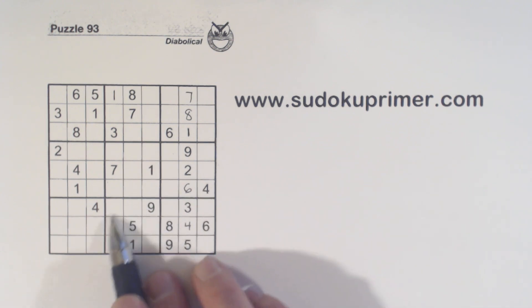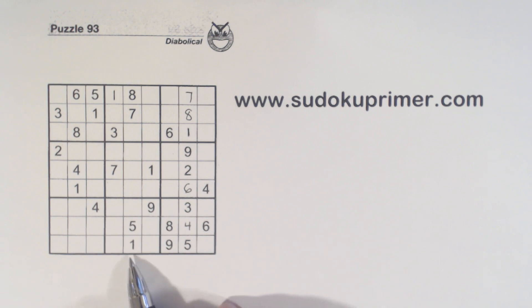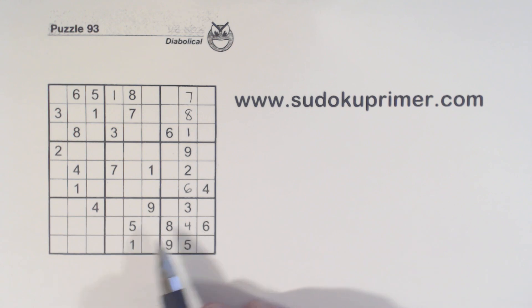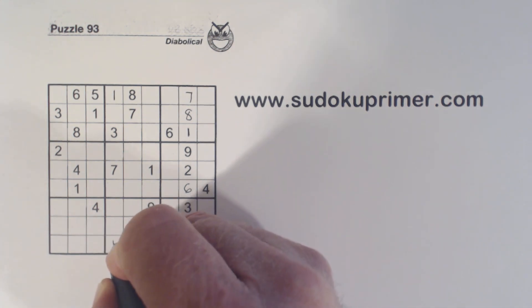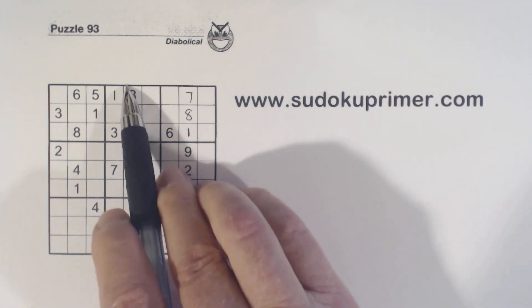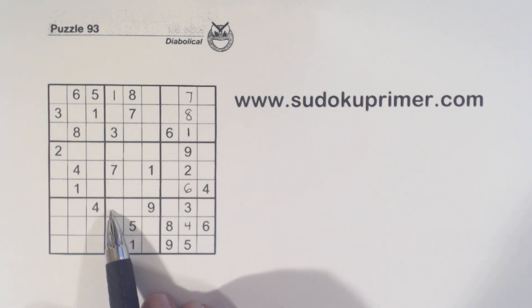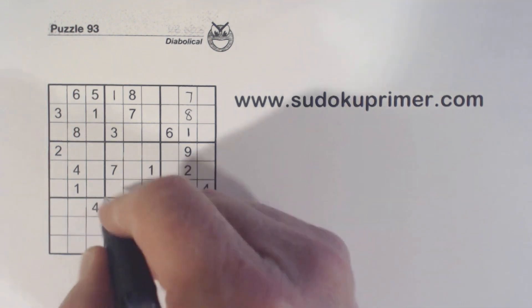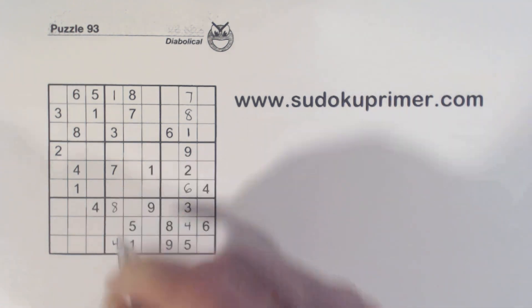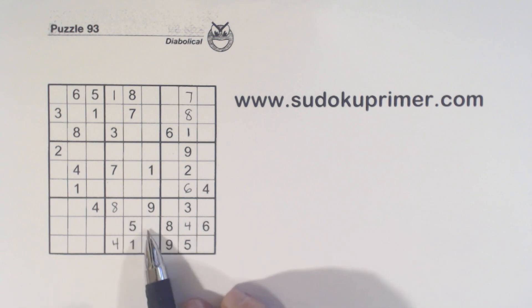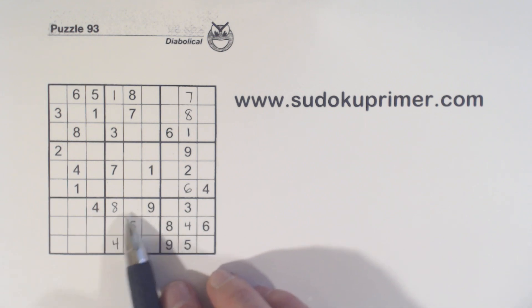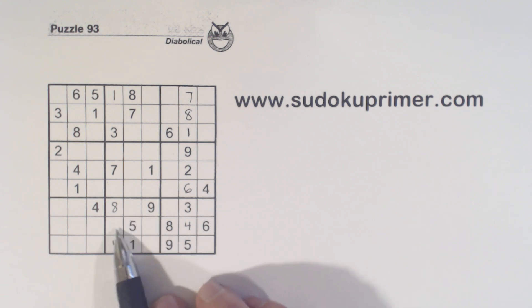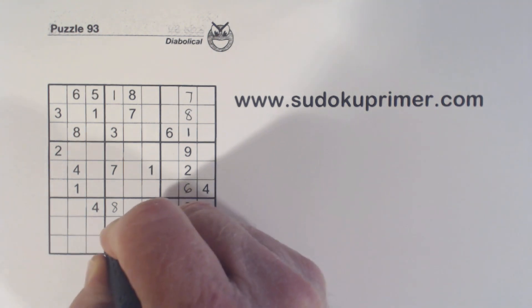Now let's look at this box right here and see what we can fill in knowing these are three-seven twins. We've got a four here and a four here, so we know that's a four. We've got an eight here and an eight here, so we know that's an eight — that can't be an eight right there, so that's an eight. Now we only have two numbers left: these three-sevens we found, and these are two and six — two-six twins.